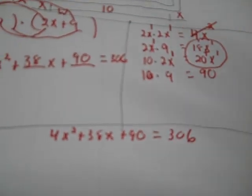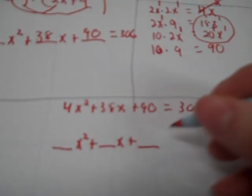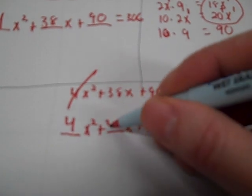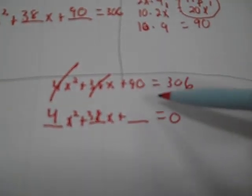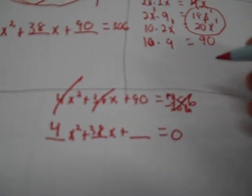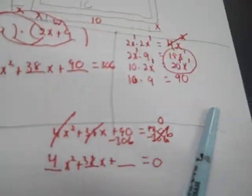The equation has two answers. We need to set it equal to zero. We line up 4x² + 38x + blank = 0. For the constant terms: we have 90 on the left and 306 on the right, so we subtract 306 from both sides. Positive 90 minus 306 gives negative 216.